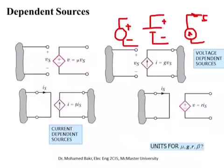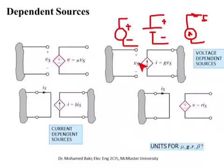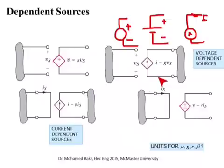A voltage controlled current source (VCCS) is a current source that supplies a specific current i, but the value of that current is proportional to a controlling voltage Vs elsewhere in the circuit. The current is i = g*Vs, where g is a constant of proportionality with units of ampere per volt, or siemens.